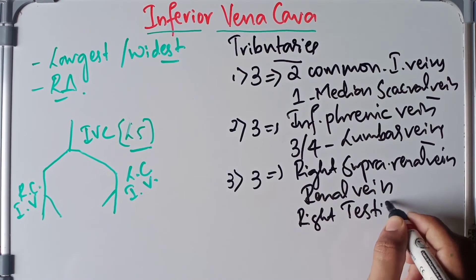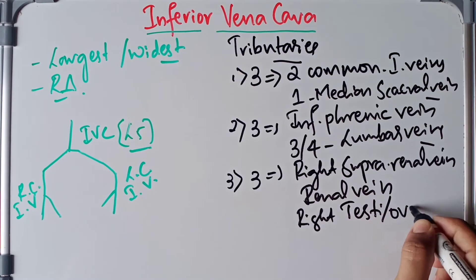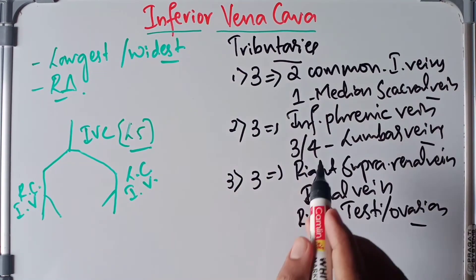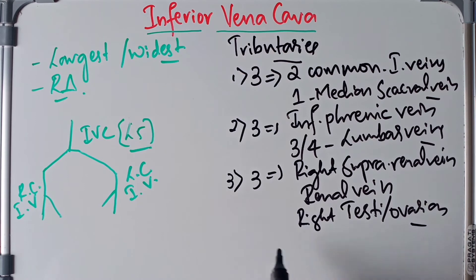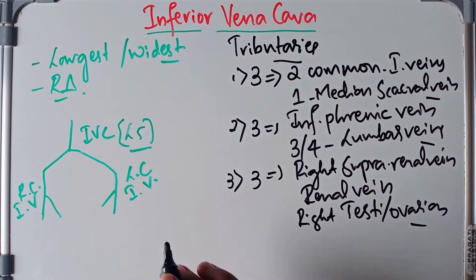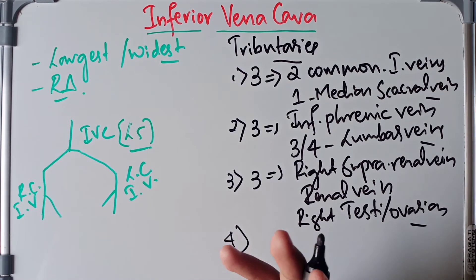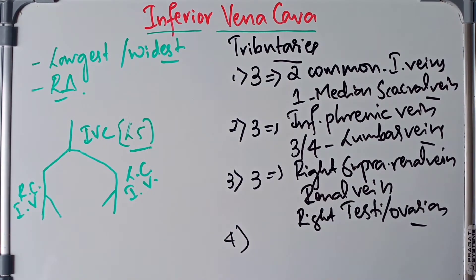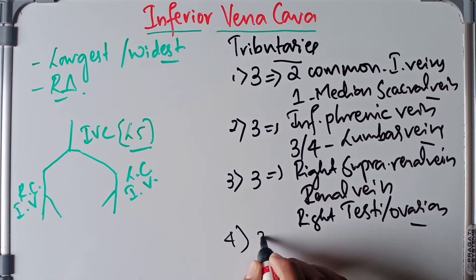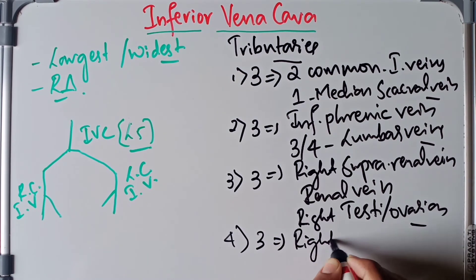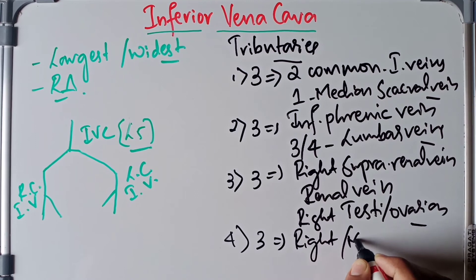Basically, these tributaries correspond to the paired branches of the abdominal aorta — those corresponding veins drain into the inferior vena cava. Finally, we have three anterior visceral tributaries: they are the right, middle, and left hepatic veins.